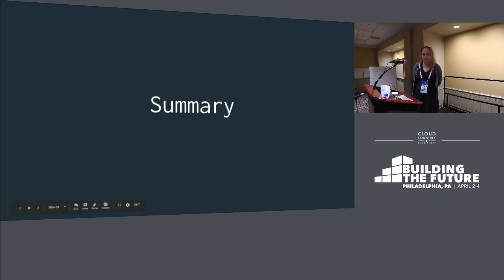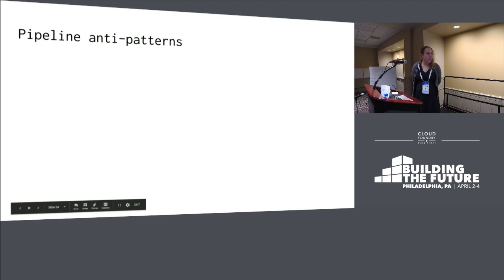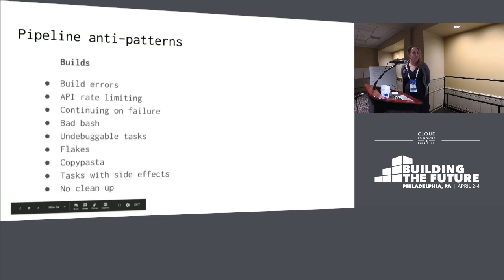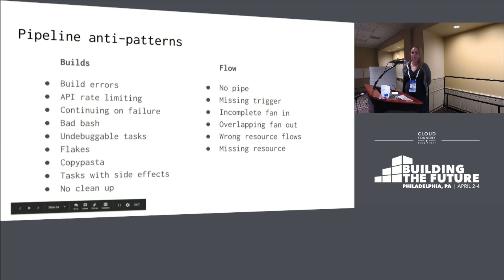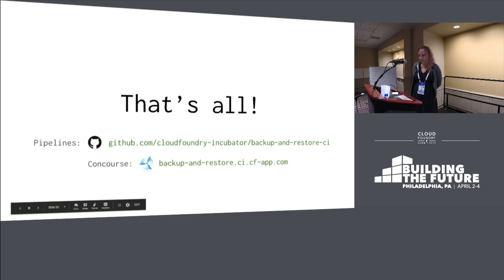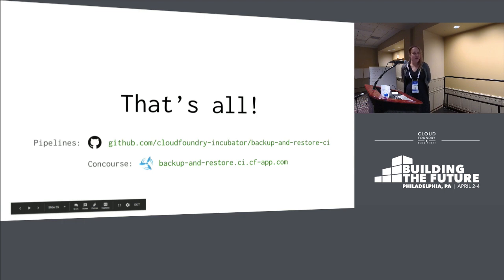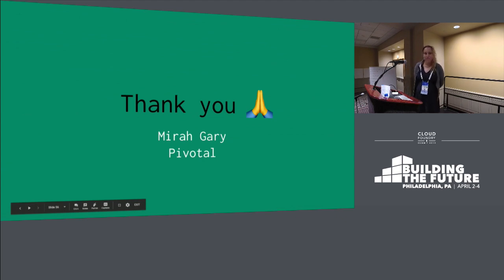So let's go over what we talked about: all sorts of pipeline anti-patterns — build anti-patterns and flow anti-patterns. Fixing all these things can make your system work better and your pipelines happier, and ensure that you don't ship a product that doesn't meet your standards. All of the platform recovery pipelines and Concourse configs are open source — you can go look at them on GitHub. The Concourse is publicly accessible too — you can see it, you can't do anything to it, but it's all online. Thank you for listening.